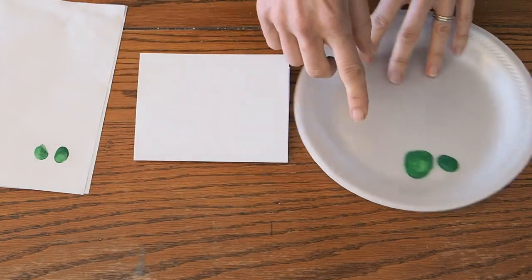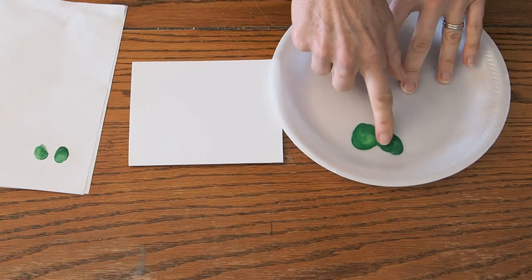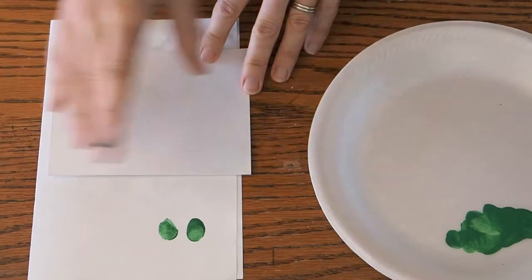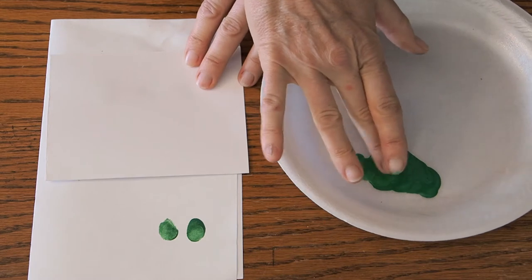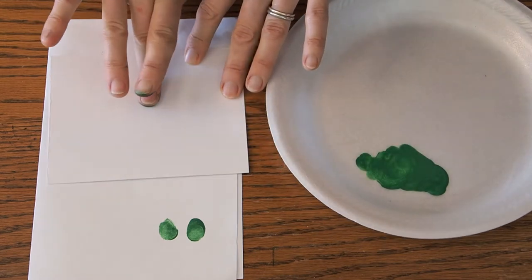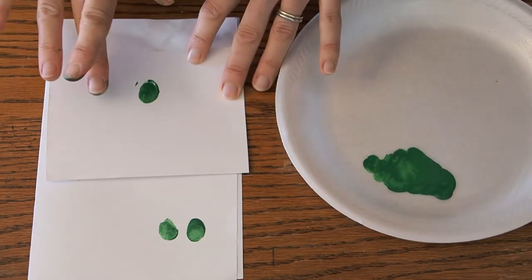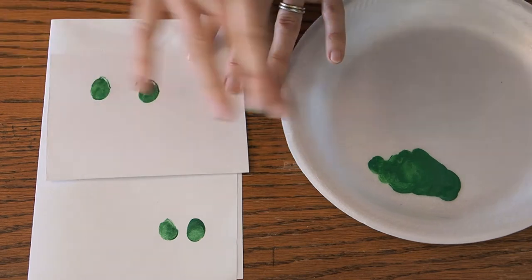So once I've decided on which finger I'm going to use, you just simply rub the paint around your finger. Make sure you don't have too much. You'll get big blobs on there. You can dab some off on the extra sheet of paper and then we're going to put our three froggies on our card.